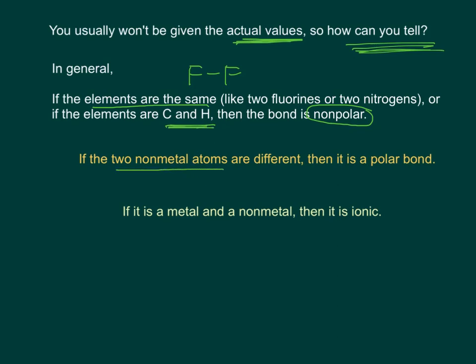If the two nonmetal atoms are different, then it is a polar bond. We don't care if it's moderately polar or very polar. We're just going to say they're different. If it's a metal and a nonmetal, then it is ionic. In the next video, we'll talk about how to figure out if the entire molecule is polar.